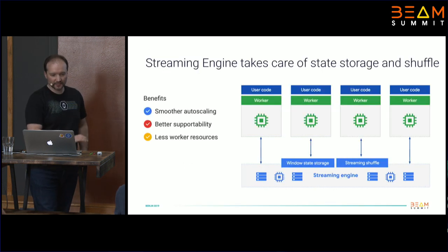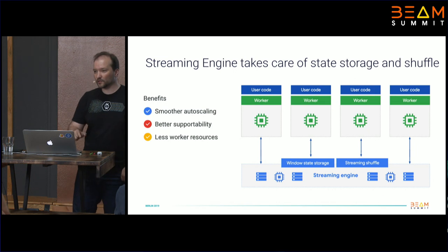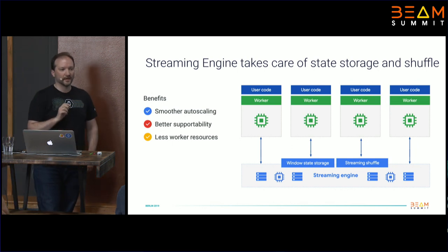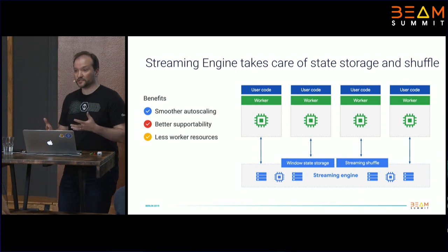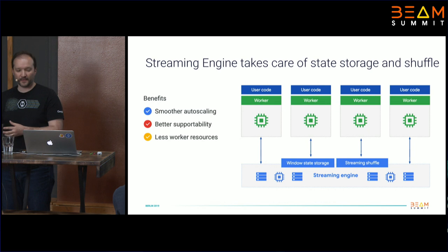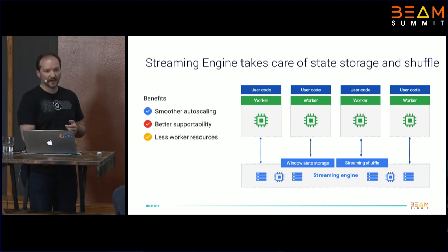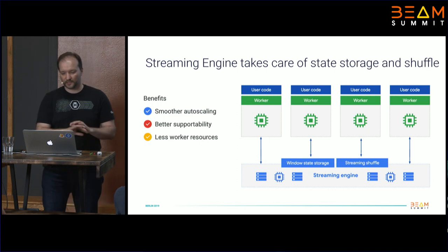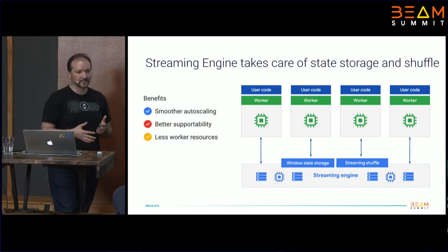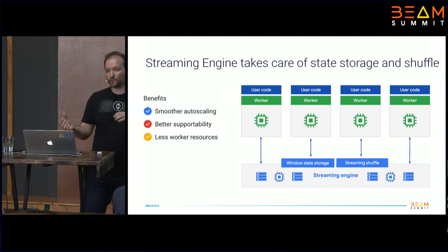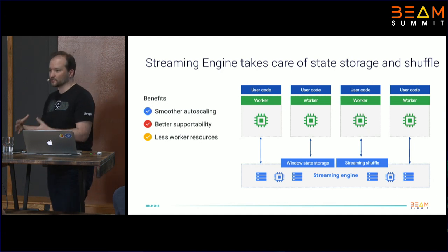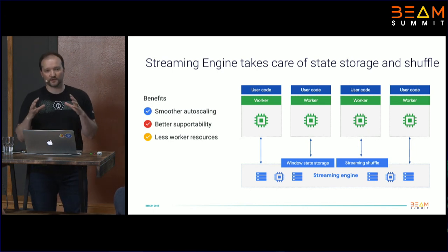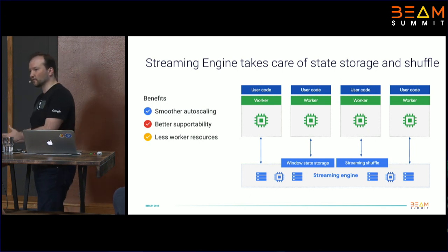So we developed a technology equivalent to Dataflow Shuffle but for streaming — we call it Streaming Engine. The Streaming Engine handles streaming shuffle and stores windowed state as a back-end service running in Google Cloud. You don't have to change your code; you simply specify an option. Magically, your streaming pipeline scales much better. Your user workers get more capacity because most streaming tasks — shuffle and state storage — have been offloaded from the VMs running your user code to the back-end service.